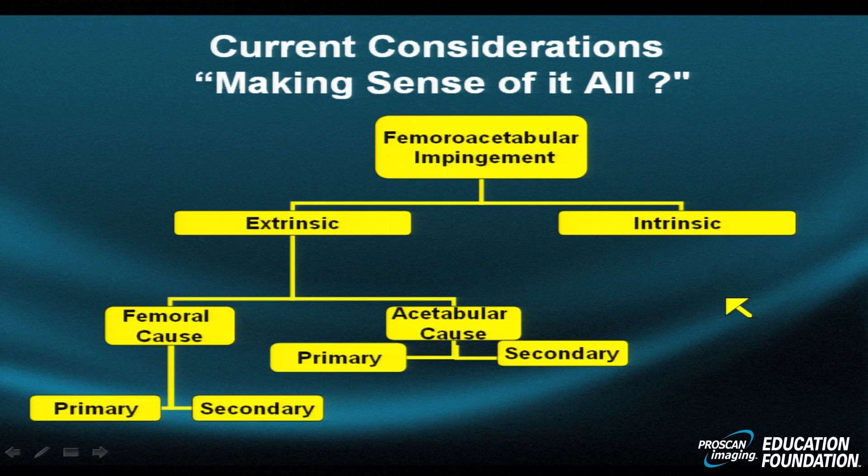What does intrinsic mean? For example, suppose you have a loose body of some size in the inferior aspect of the joint. In certain positions — say leg flexion or knee flexion — it pushes the femoral head up by its very mass effect, driving the femoral head into the acetabular roof. That is an intrinsic problem: a mass within the joint producing abnormal displacement in certain positions.